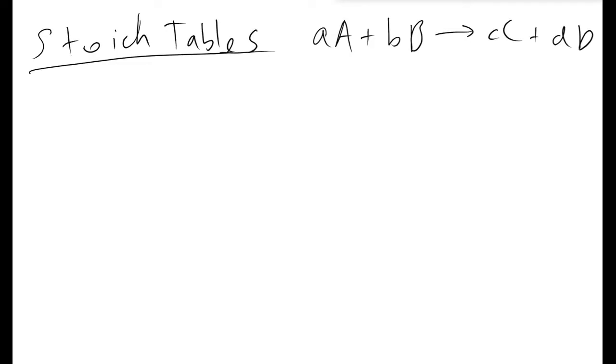So what I'm going to do in this video is show you guys how we create stoic tables based on a generic reaction. In this example we'll have little a moles of some reactant called big A and some little b moles of some reactant big B forming product C and products D.